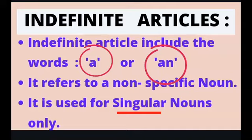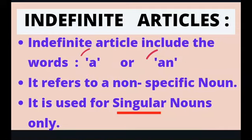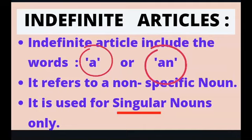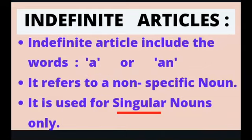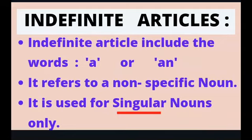Now let us understand indefinite articles. Indefinite articles include the words 'a' or 'an'. An indefinite article refers to a non-specific noun — that is, a noun which is not known to both the speaker and the listener. It is used for singular nouns only. You will understand this through a few examples.